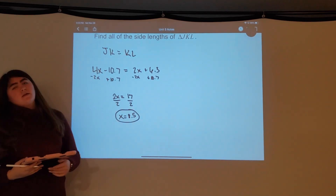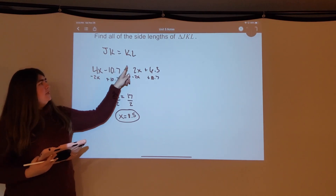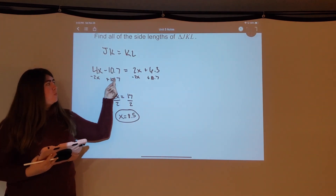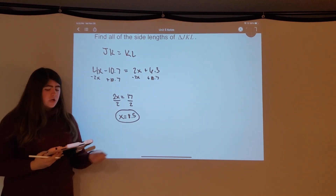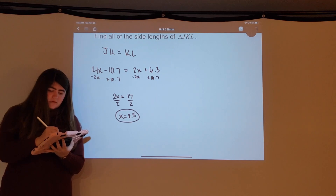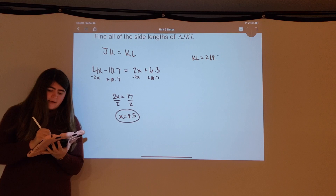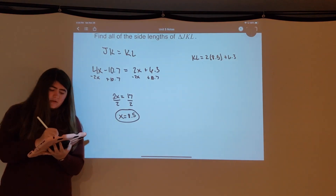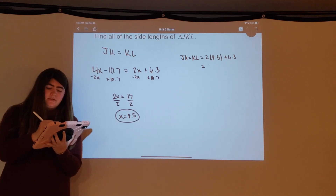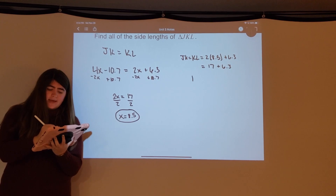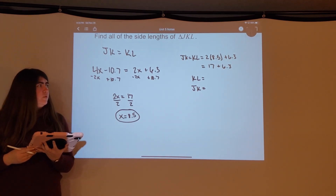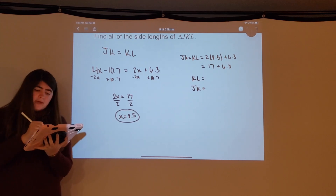Now that we have x, we can solve for the missing pieces. KL equals 2x plus 6.3 and JK equals 4x minus 10.7, but they have the same value. Choosing KL: KL equals 2 times 8.5 plus 6.3, which also equals JK. That's 17 plus 6.3, so KL and JK are both equal to 23.3.